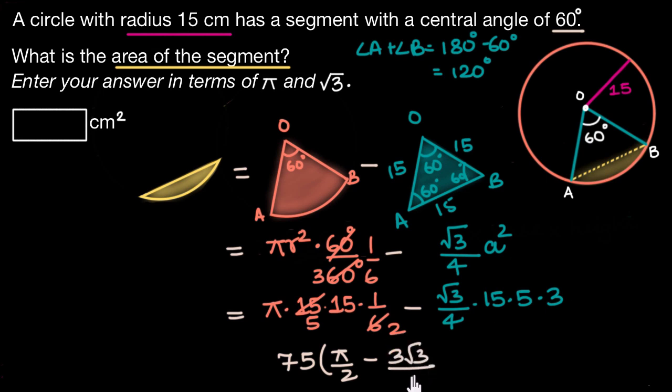So 15 times 5 is 75 and we are left here with π/2 minus 3√3/4. So this is the area of our segment right over here and this is equal to 75 times (π/2 minus 3√3/4) centimeters squared.